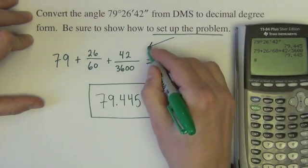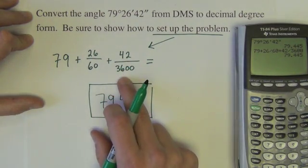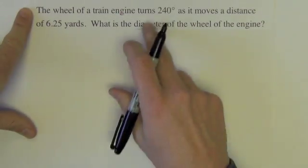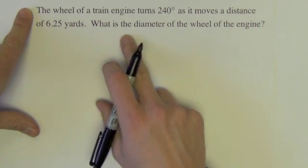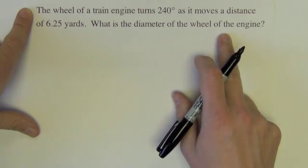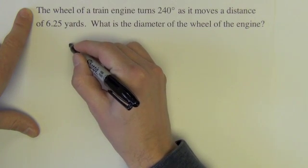So I definitely want to see this on the test and I'll mark off for not seeing it. The next problem says the wheel of a train engine turns 240 degrees as it moves a distance of 6.25 yards. What is the diameter of the wheel of the engine?